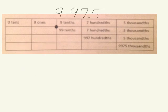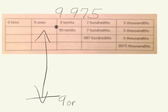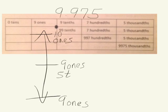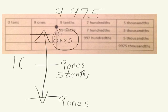Rounding to the ones place, our vertical number line shows we start at 9 ones and the next one up is 10 ones. Halfway between 9 ones and 10 ones is 9 ones and 5 tenths. Our number is 9 ones and 9 tenths, which is closer to the top. Rounded to the nearest ones place, it rounds to 10 ones, which is ten.